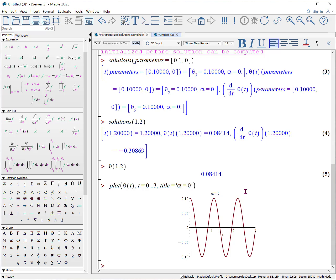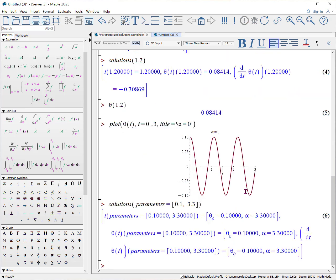Now what we can do is we can change our solutions to two other numbers. So solutions, again parameters to tell it that we need to pass it new parameters equals, open square bracket, and again the list of the two values. Again we'll start it at 0.1 radians, but now we will give it an α value of 3.3.